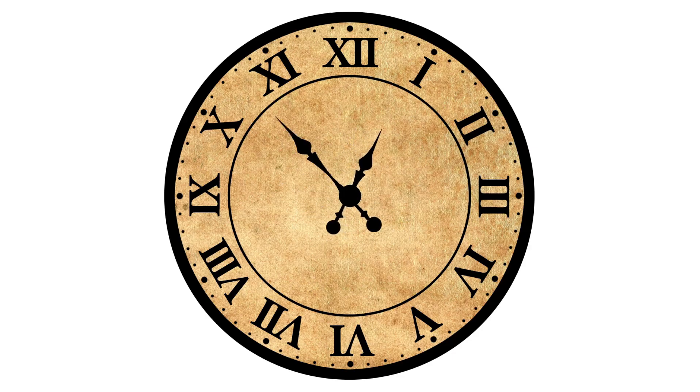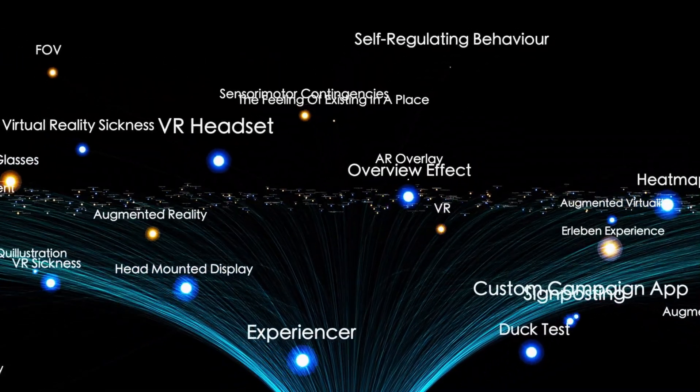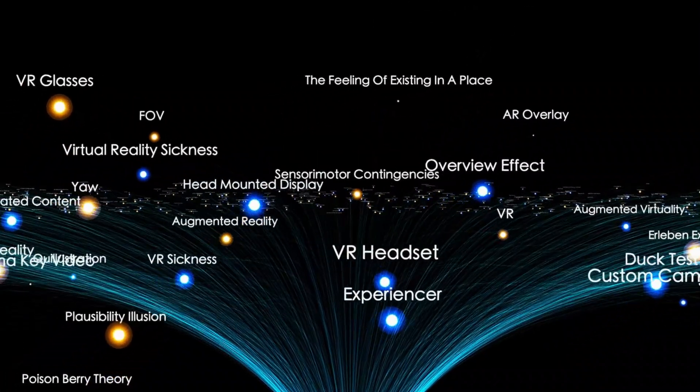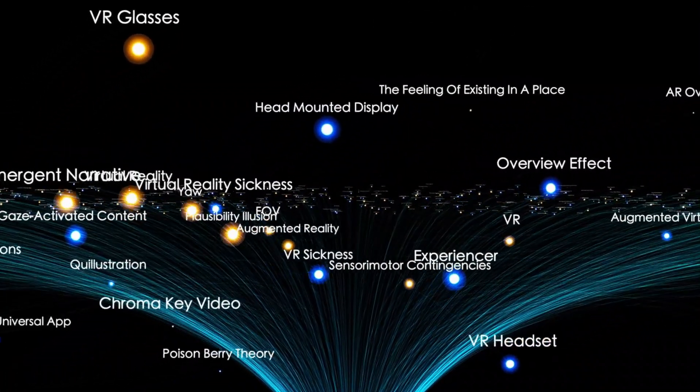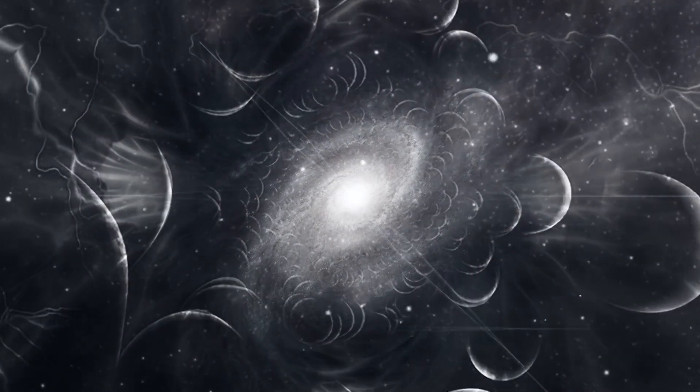Did time have a beginning? Understanding this requires separating three key ideas: The hot Big Bang as a description of our universe's early state, cosmic inflation as the process that set the stage for the Big Bang, and the broader question of the ultimate beginning.